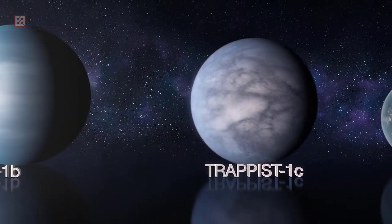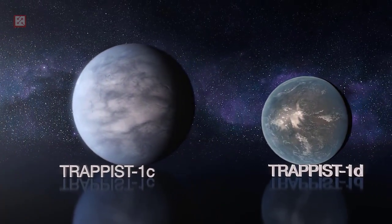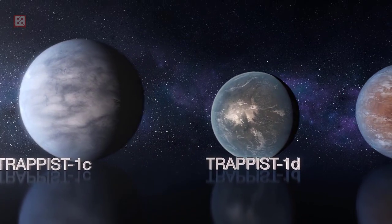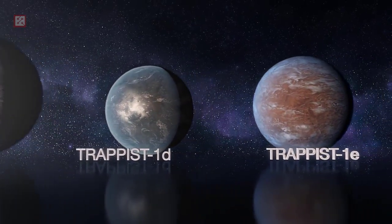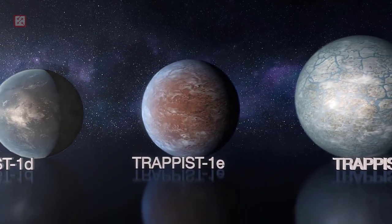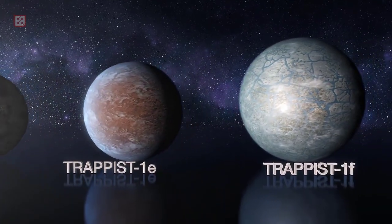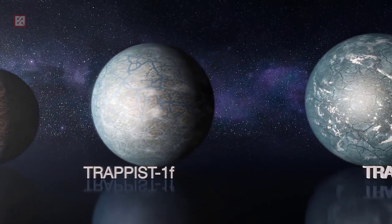TRAPPIST-1E orbits its host star quite closely. One full revolution around TRAPPIST-1 takes only 6.099 Earth days to complete. The planet is likely tidally locked, with one side of its hemisphere permanently facing towards the star, while the opposite side is shrouded in eternal darkness. The temperature around the terminator line could support the existence of liquid water.